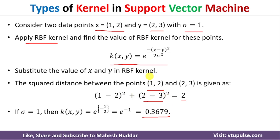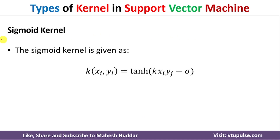The RBF kernel value is 0.3679 for these two data points with σ equal to 1. The last type of kernel is the sigmoid kernel, given by k(x_i, y_i) = tanh(k·x_i·y_j − δ), where we apply the hyperbolic tangent function to the given data points.